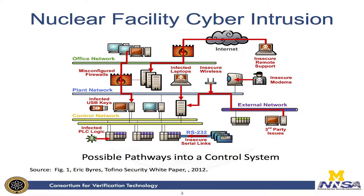Here is a demonstration of the possible propagation path to compromise a nuclear plant using techniques like privilege escalation or malware propagation. A malware can be released remotely from the internet and then try to propagate inside the nuclear plant to compromise the target.